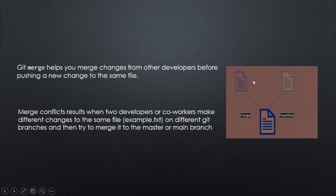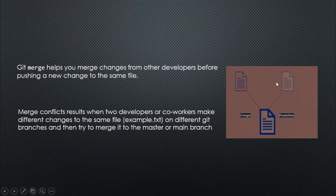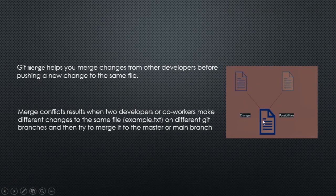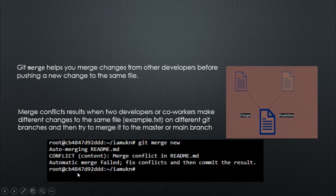For instance, your co-worker makes a change to a file example.txt, and then a day after you decide to make a change to that same file on the main branch. At some point you need to submit this project back to your client, and you decide to merge your co-worker's branch back to the main branch. In the process of merging them, there will be a conflict because the same file has been modified on two different branches. This is a graphical representation of what you see when faced with a conflict error.